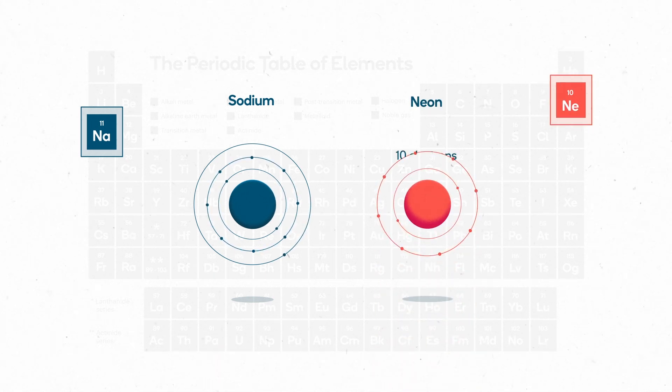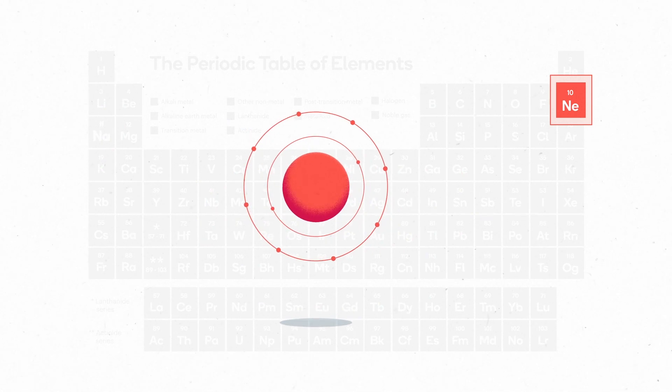Neon atoms have 10 electrons while sodium atoms have 11. This doesn't seem like much of a difference, but their electron configuration shows us why it matters.